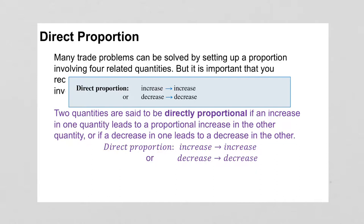Direct proportion. Two quantities are said to be directly proportional if an increase in one quantity leads to a proportional increase in the other. So as long as increase goes to increase or decrease goes to decrease, then they are directly proportional.